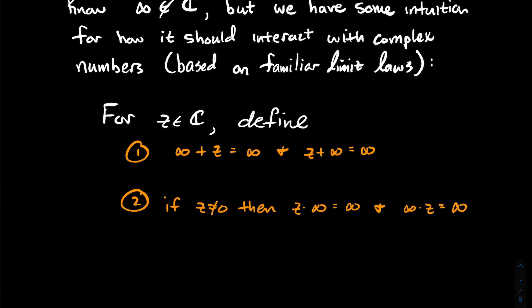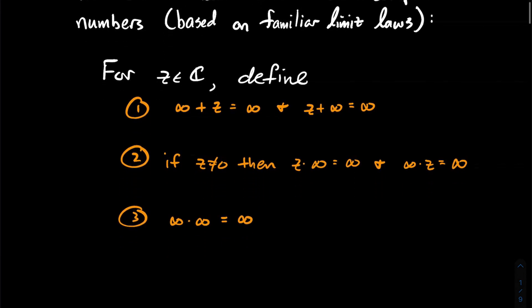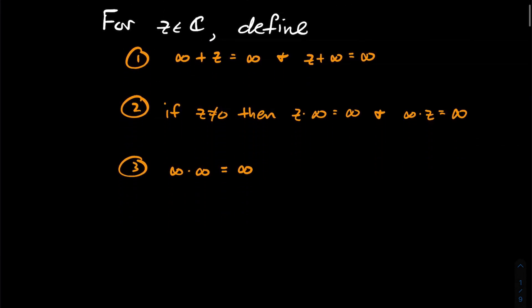If z is non-zero, then z times infinity, in either order, ought to just give you back infinity. Infinity times infinity ought to give you infinity. z divided by infinity — a fixed complex number divided by something intuitively massive — should be zero.